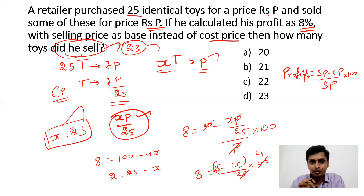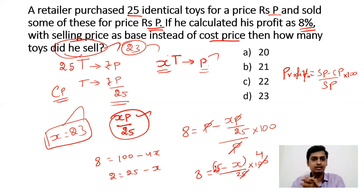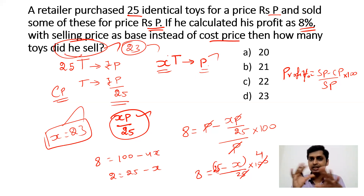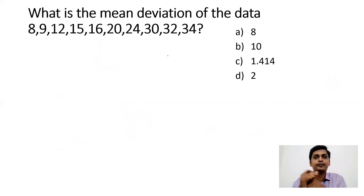Hope you understood how to solve this question. We worked it purely based on assumption — we kept the total number of toys sold as X, and cost price of one toy as P/25. Based on this assumption, the answer is 23. Now moving to the next question.